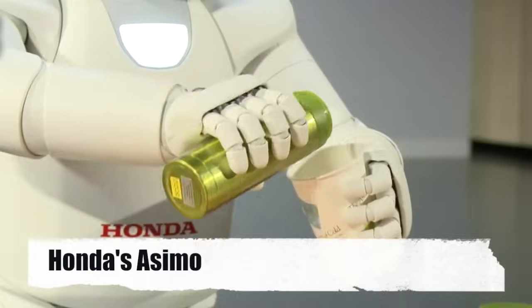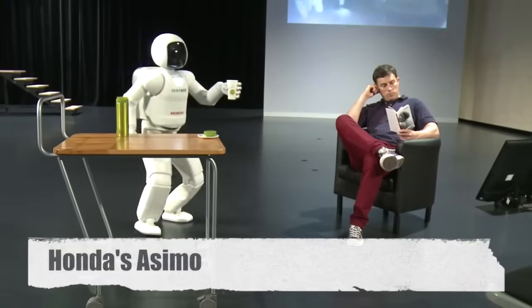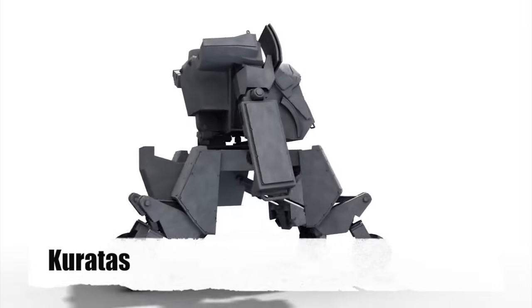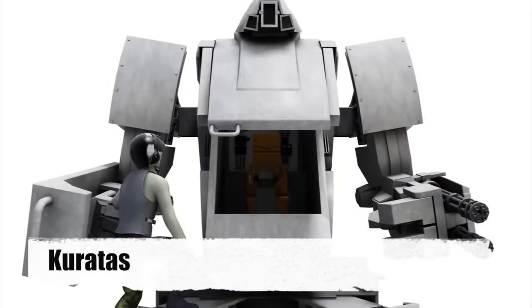Asimo can do sign language, play soccer, and even serve drinks. The Kuratas robot was developed by artist Kogoro Kurata.